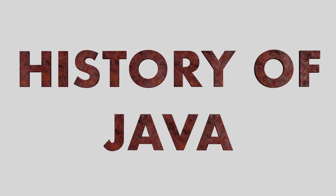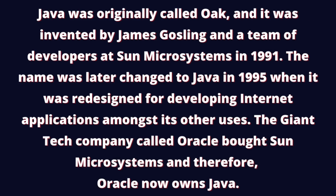A little bit about the history of Java. Java was originally called Oak and it was invented by James Gosling and a team of developers at Sun Microsystems in 1991. The name was later changed to Java in 1995 when it was redesigned for developing internet applications. The giant tech company Oracle bought over Sun Microsystems, and therefore Oracle now owns Java — so if anyone asks which company is the parent company that owns Java, right now it is Oracle.